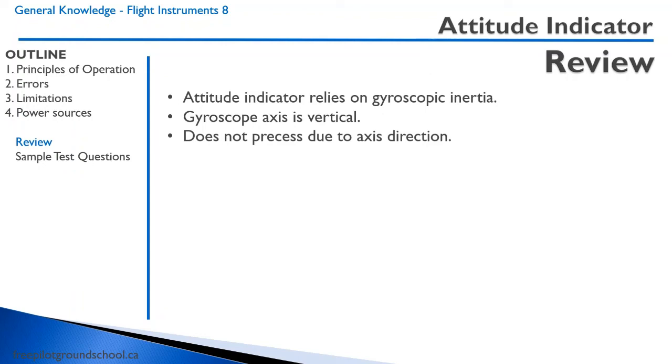Okay, let's review. The Attitude Indicator relies on gyroscopic inertia. The gyroscope axis is vertical. The gyroscope does not precess due to the axis direction unless there is a slip or a skid in a turn.